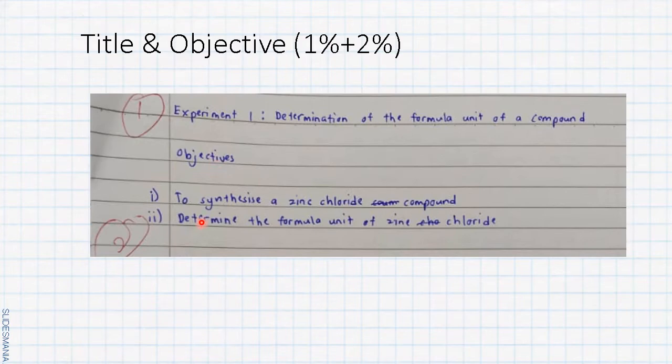Next, followed by objective. There are two objectives: to synthesize a zinc chloride compound and to determine the formula unit of zinc chloride. So here you get two marks.